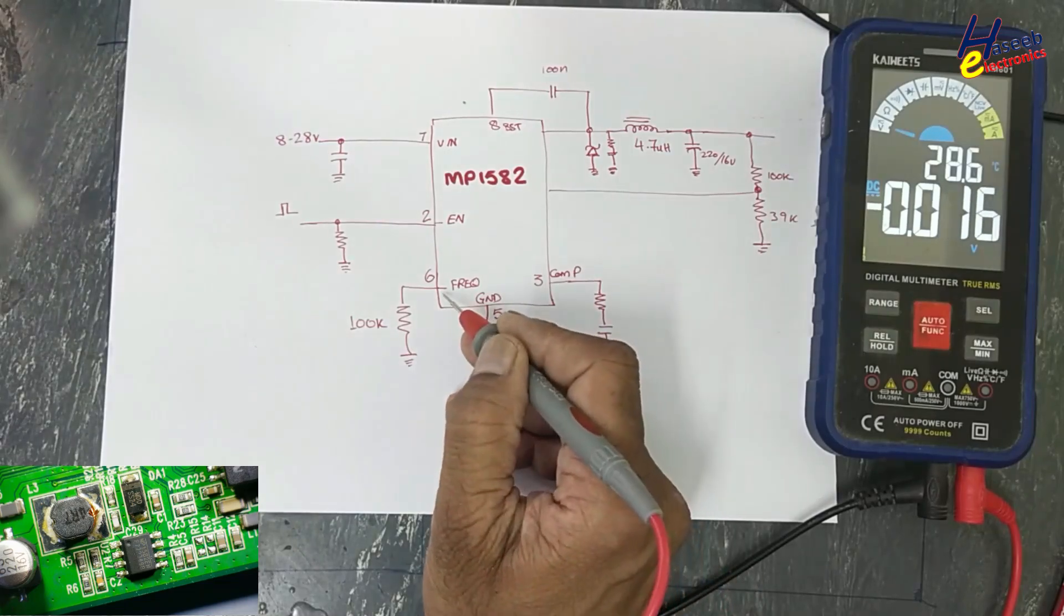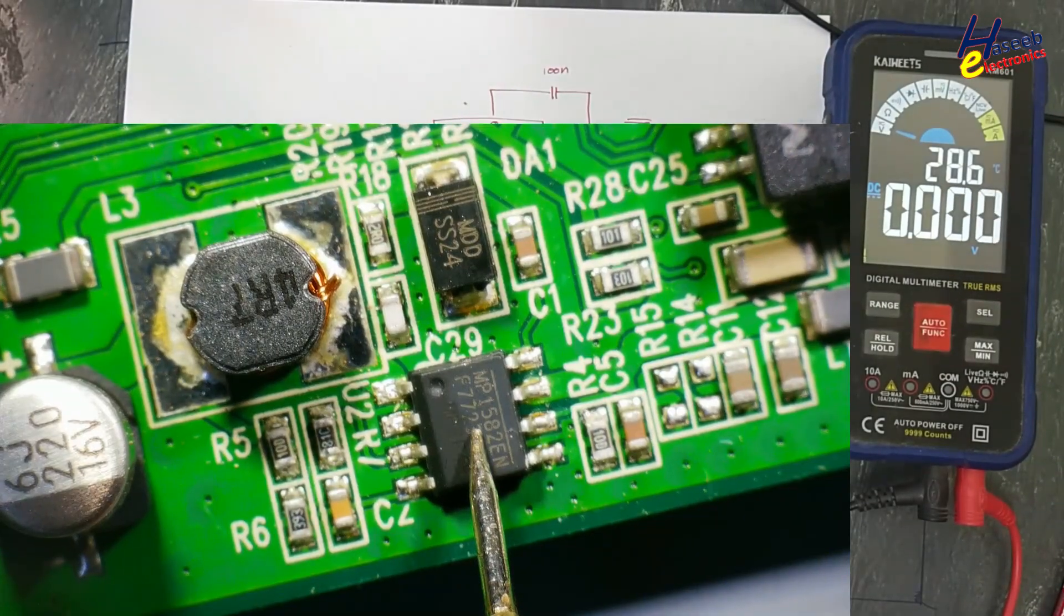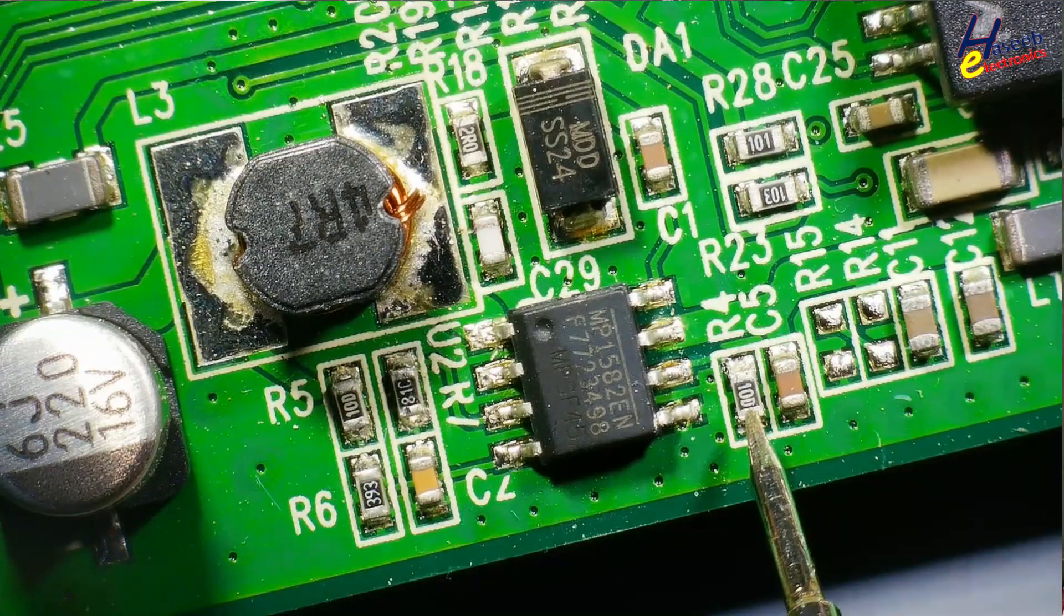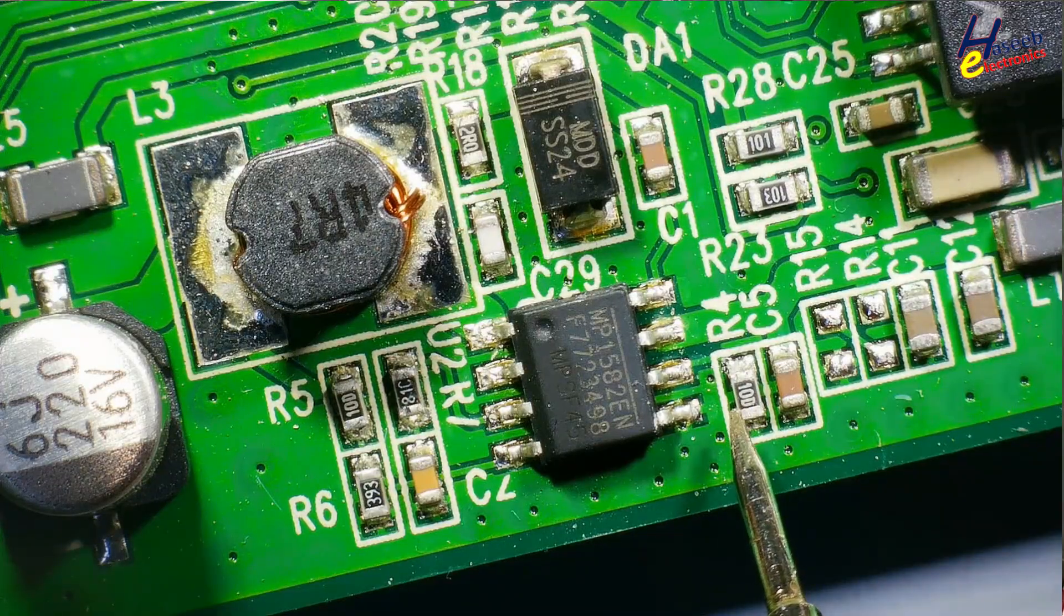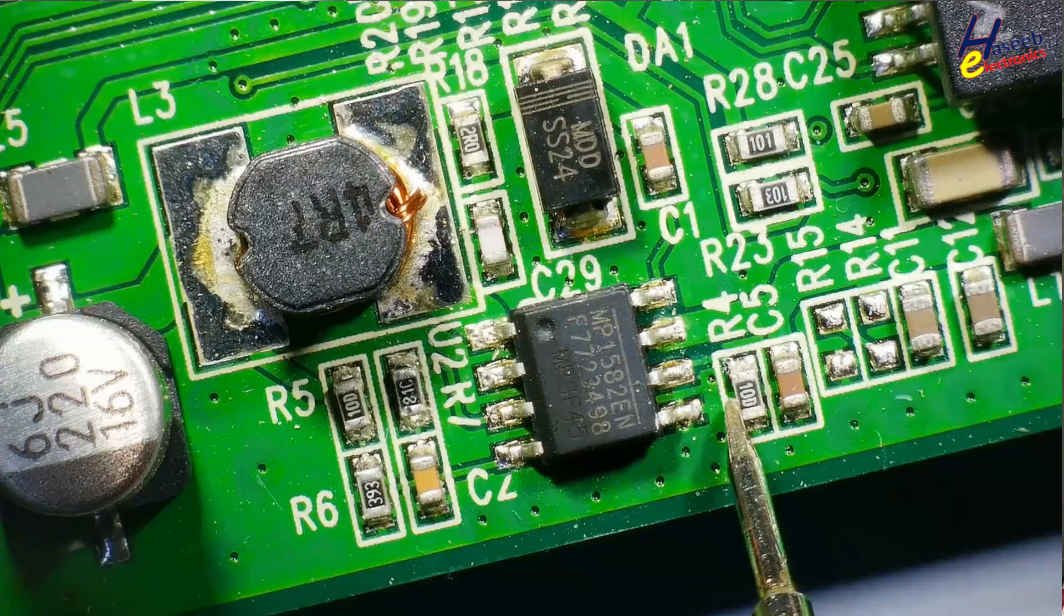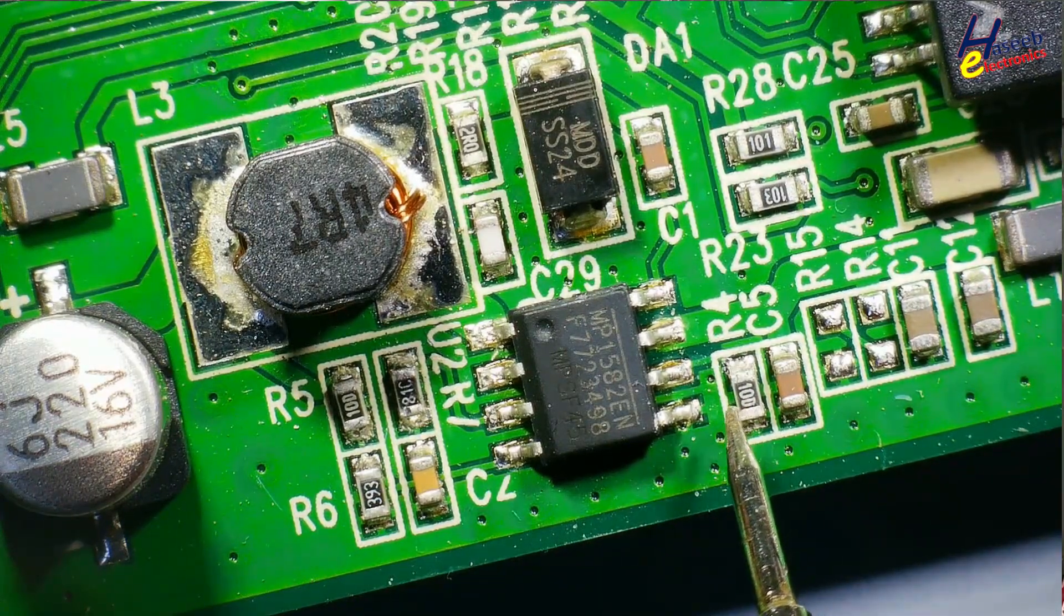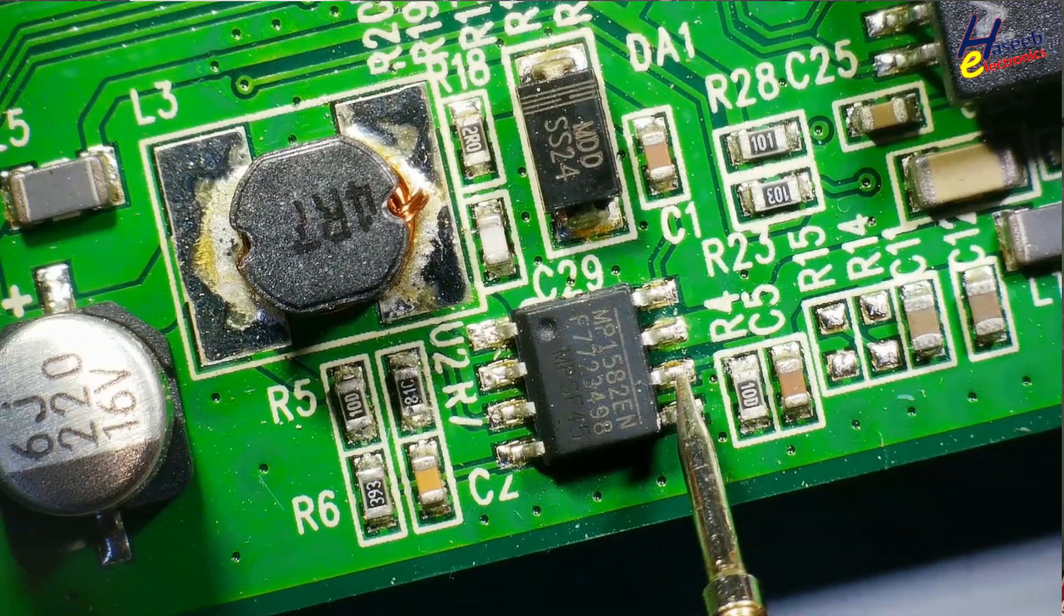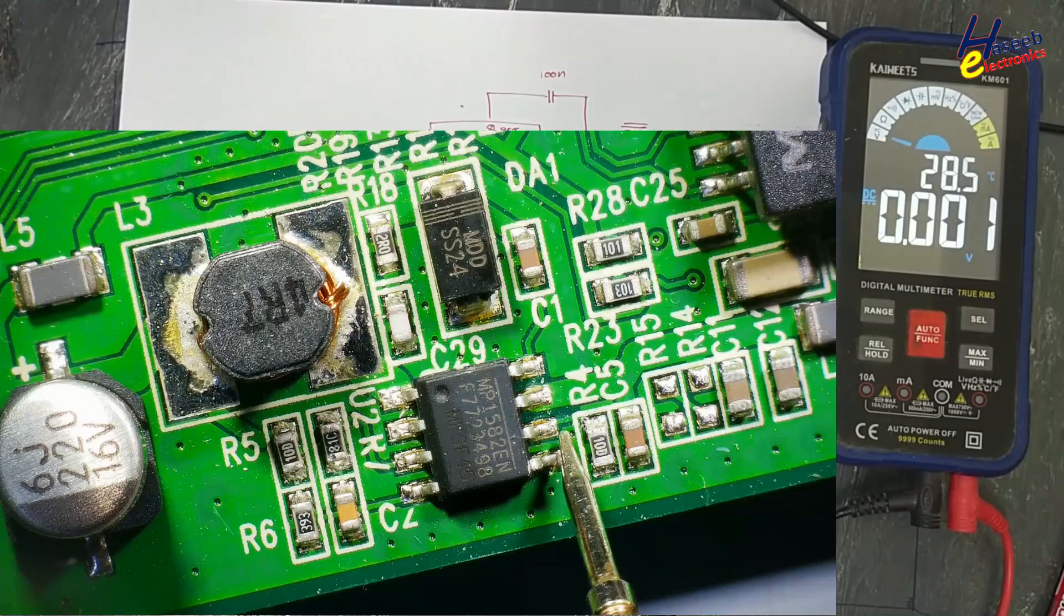There is pin number six that is frequency adjusting pin. Switching frequency of this IC is programmable up to 1.5 megahertz. 10D resistor, it is 100k because 10D is EIA 96 code. 10 is equal to 100 and D is 1000, so 100,000 ohms.